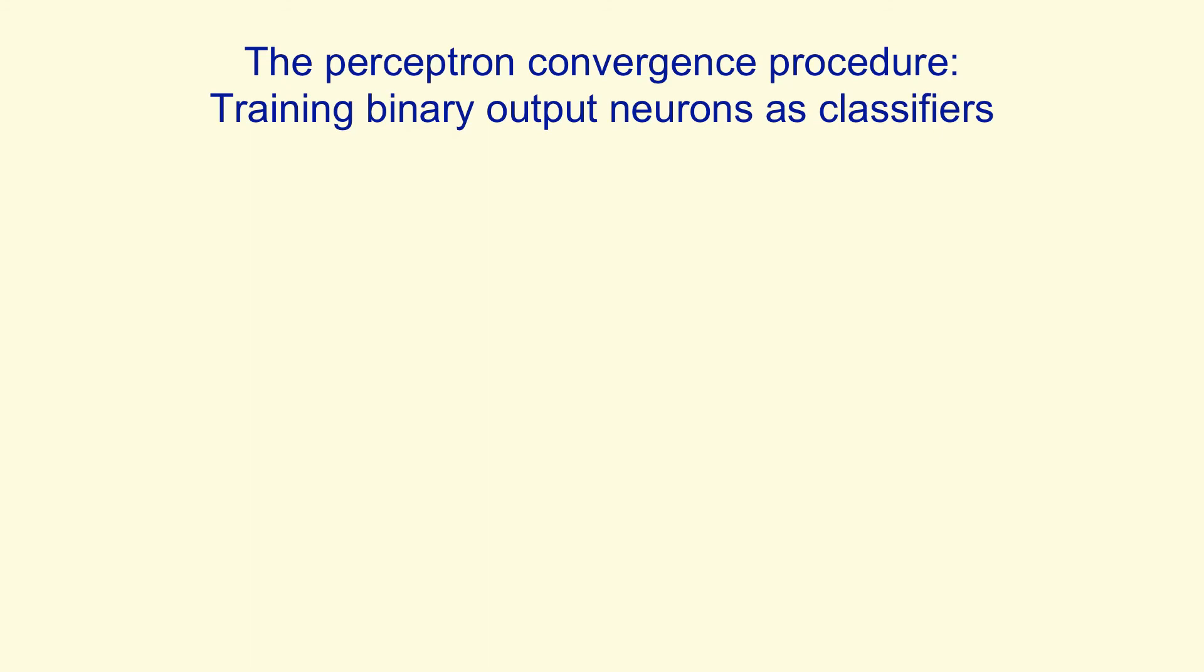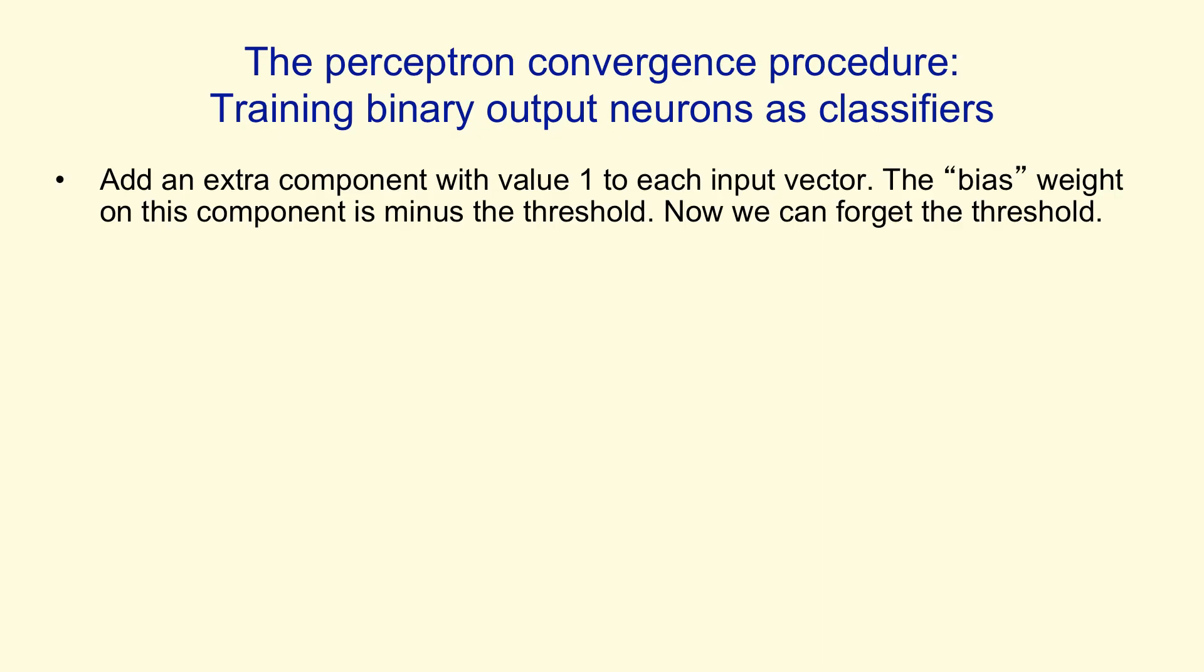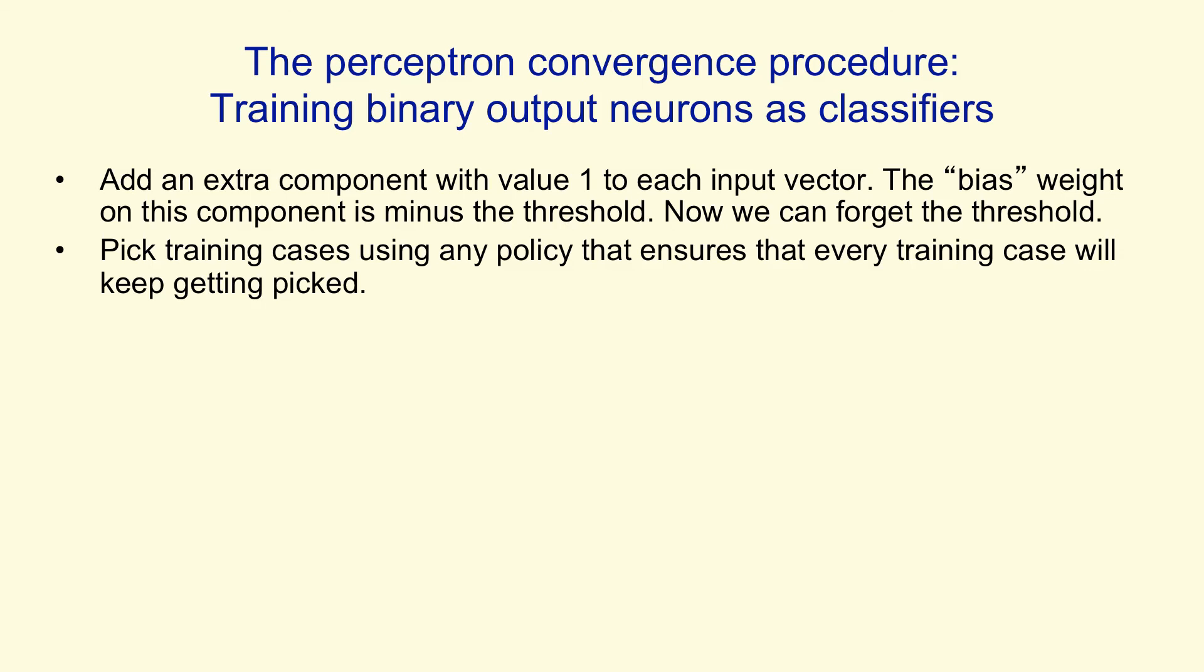So here's the very powerful learning procedure for perceptrons. And it's a learning procedure that's guaranteed to work, which is a nice property to have. Of course, you have to look at the small print later about why that guarantee isn't quite as good as you think it is. So we first add this extra component with a value of 1 to every input vector. Now we can forget about the biases. And then we keep picking training cases using any policy we like, as long as we ensure that every training case gets picked without waiting too long.